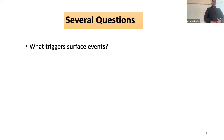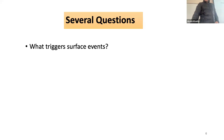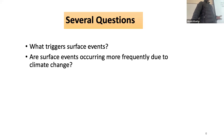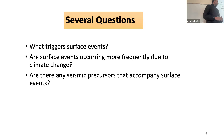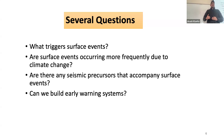For any landslide or surface event, we have general questions: what triggers surface events? We know that pore pressure changes in the subsurface — mostly caused by rainfall or earthquakes — cause landslides. But questions remain about duration, intensity, how large the earthquake needs to be, how close. Are surface events occurring more frequently due to climate change? Are there seismic precursors? Can we build early warning systems? We can ask similar questions for earthquakes, and we have much better answers for earthquakes than for surface events.